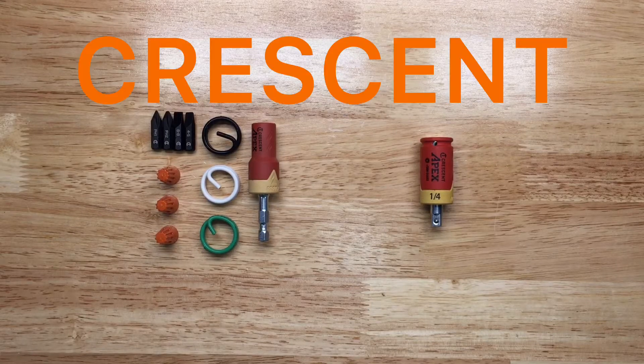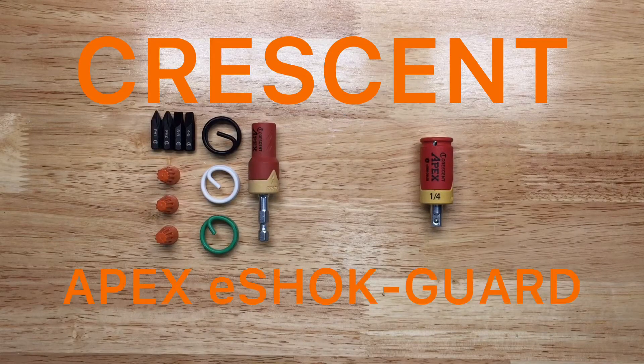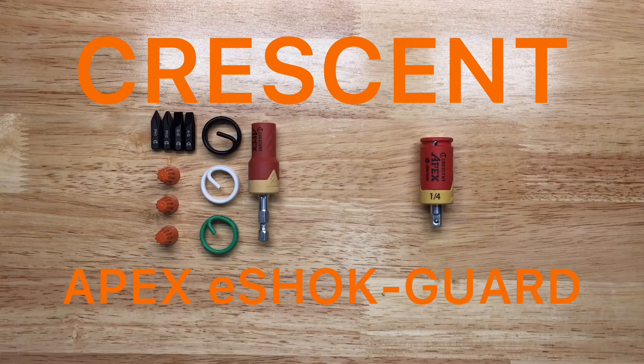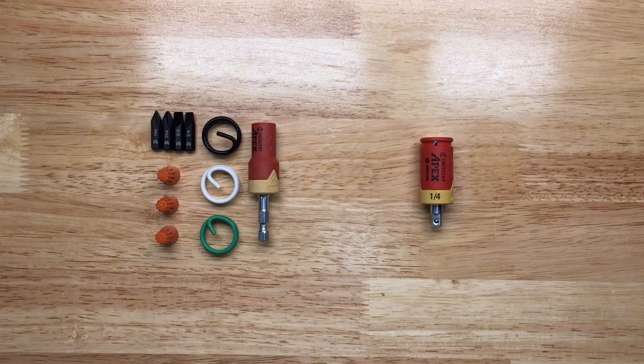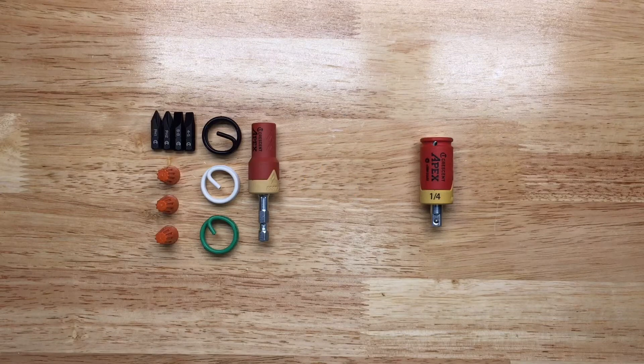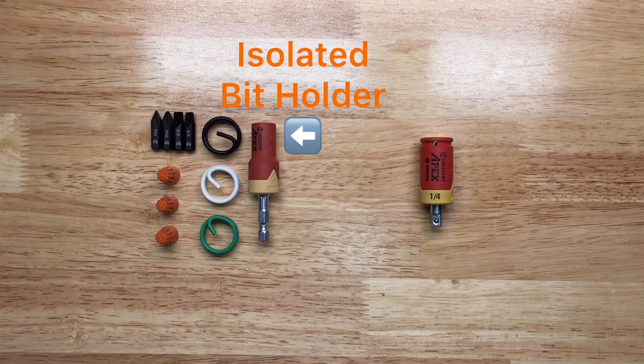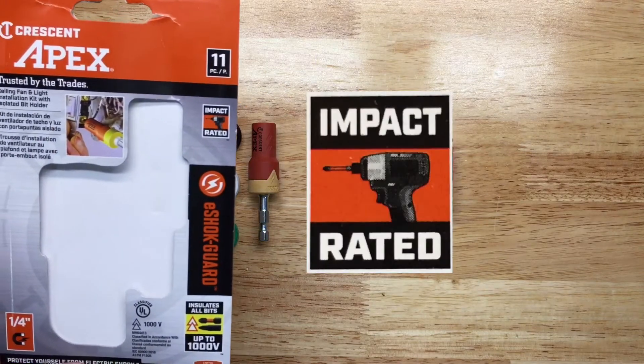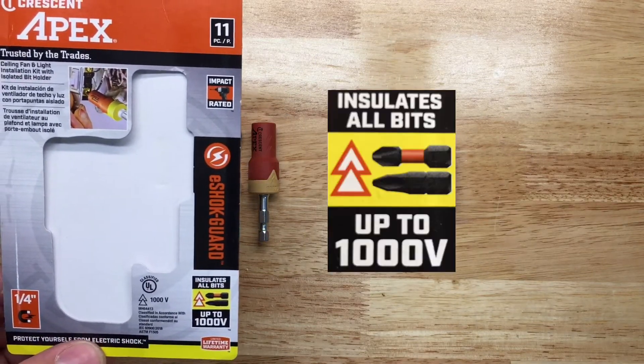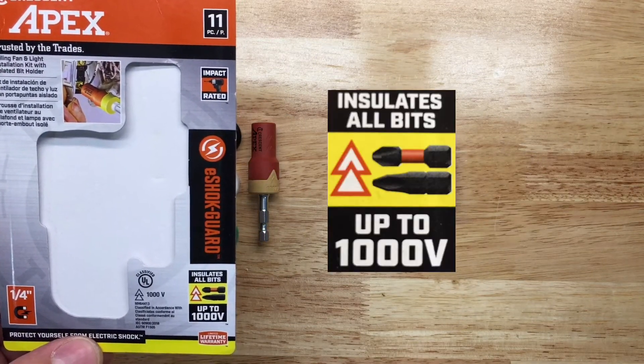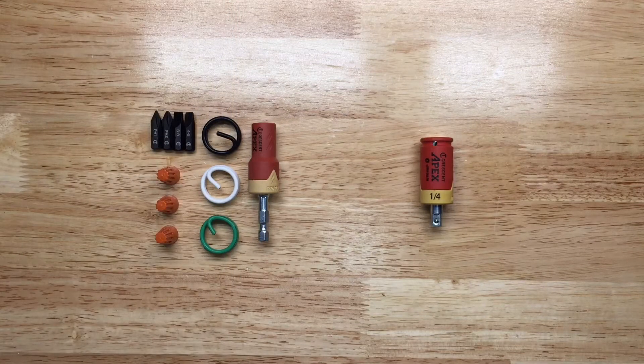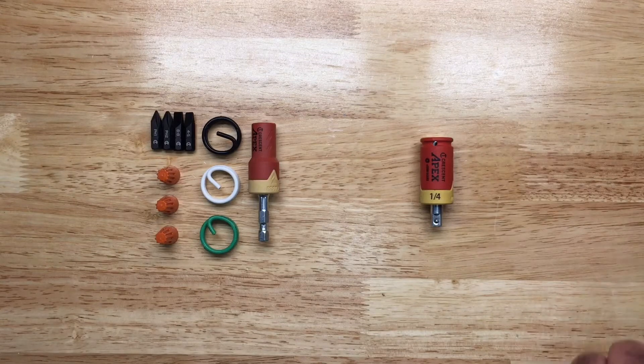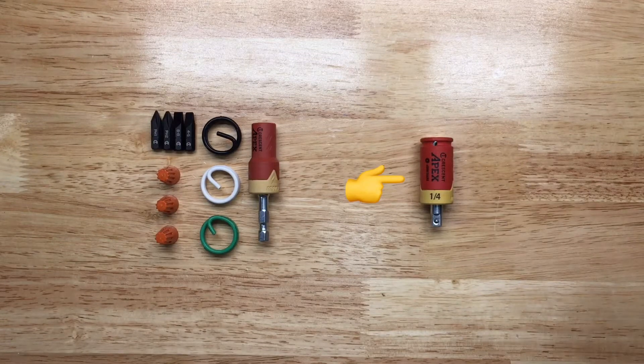This is from Crescent, the Apex e-shock guard. On the left is a ceiling fan and light installation kit with a quarter inch isolated bit holder. It's impact rated and insulates all bits up to 1,000 volts. It comes with three pigtails, three wire nuts, and four bits. On the right is a socket isolator, also impact rated, that insulates all sockets up to 1,000 volts.